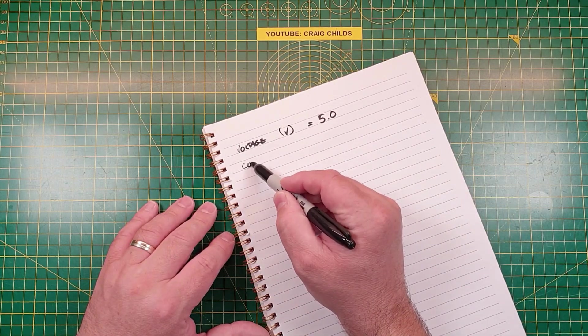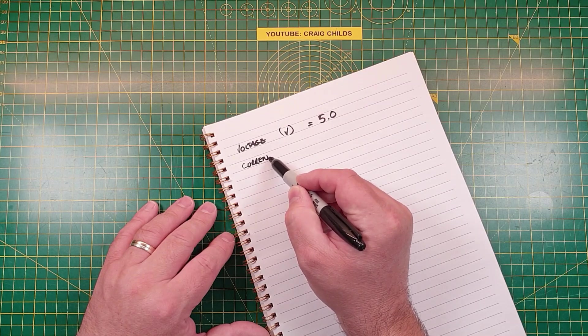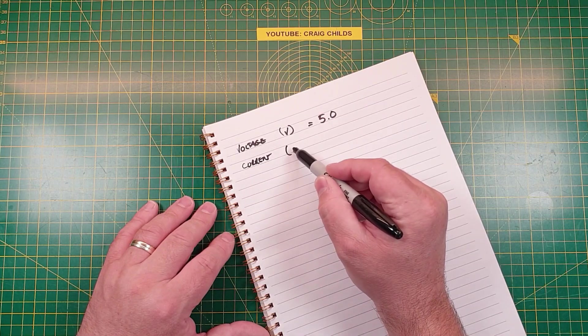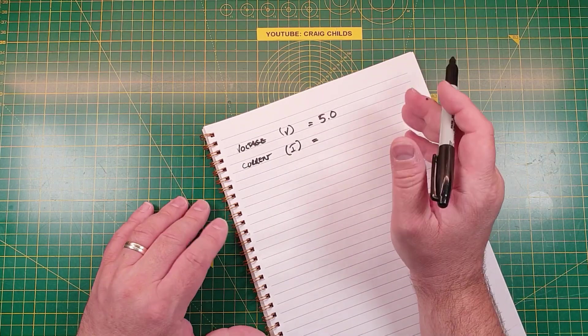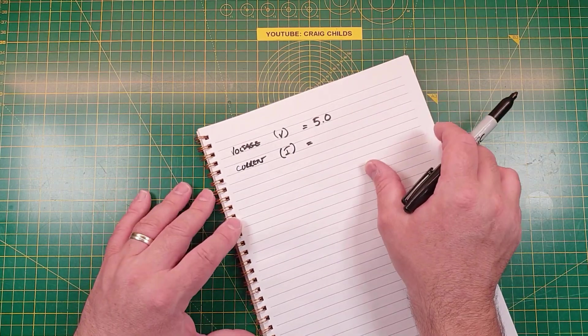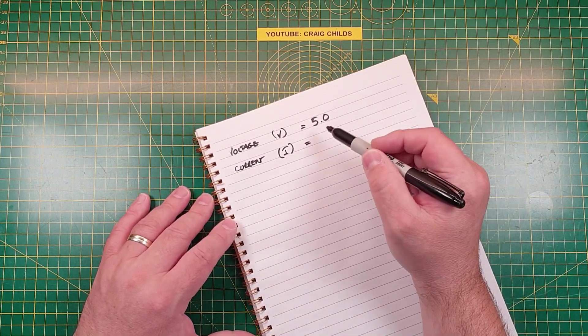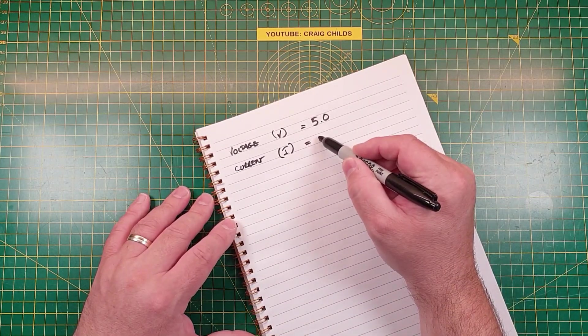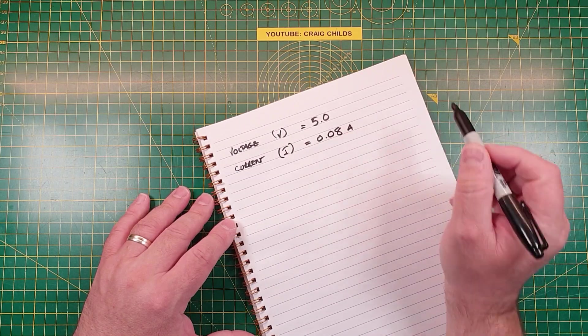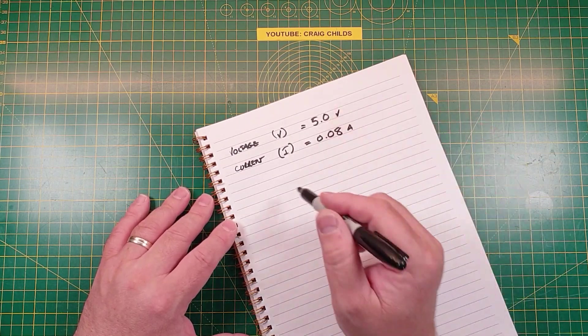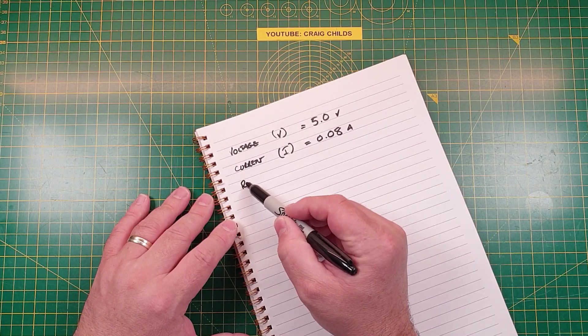Then the current that we're working with, current represented as letter I, and we know that to be 80 milliamps. And when you're calculating Ohm's law you work in amps, so 80 milliamps is 0.08 amps.